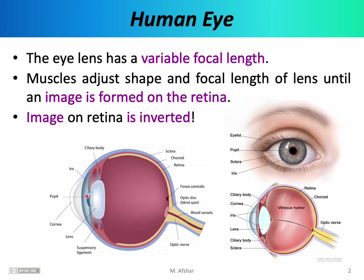Light that passes through the pupil encounters the lens of the eye. The lens of the eye is the most important part of this picture. It is actually a flexible lens, connected to the rest of the eye through ciliary bodies, which act essentially as muscles. The ciliary bodies are capable of contracting and relaxing. As they do so, they change the shape of the eye. For example, if the ciliary muscles contract, they tend to stretch the lens of the eye, in which case the eye lens becomes relatively flat.